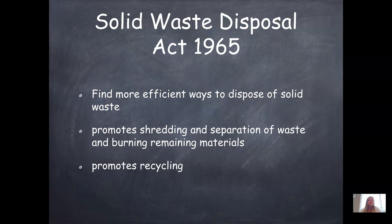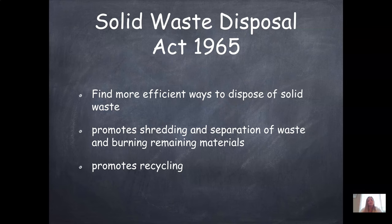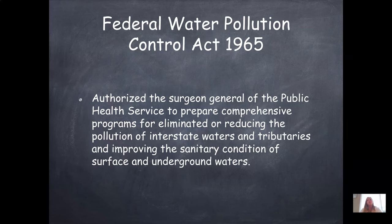The Solid Waste Disposal Act of 1965 sought more efficient ways to dispose of solid waste, promoting shredding and separation of materials, burning remaining materials, and recycling. The big thing that comes out of this is the recycle bin. In 1965 they started moving toward recycling plastic, glass, and cardboard instead of throwing everything in the dump. There are still things that go to landfills, but recyclable materials like cardboard boxes should be going into your blue recycle bin because they can be reused.